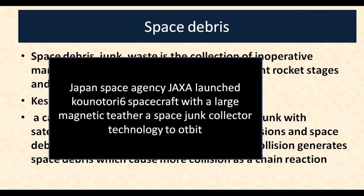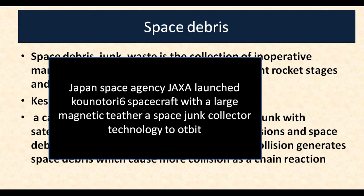Japan's space agency JAXA launched the KANU-26 spacecraft with a large magnetic tether — a space junk collector technology — to orbit, in order to clean up space and redirect the junk towards Earth's atmosphere. However, this experiment failed in orbit.